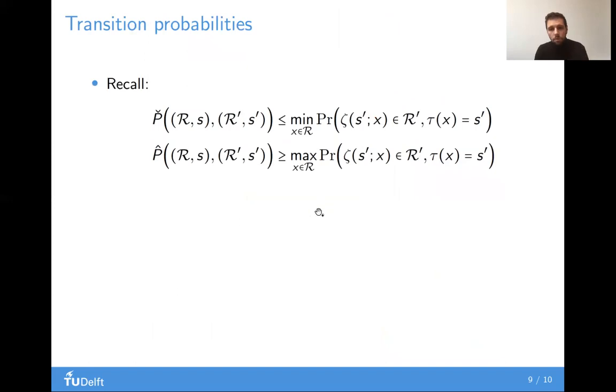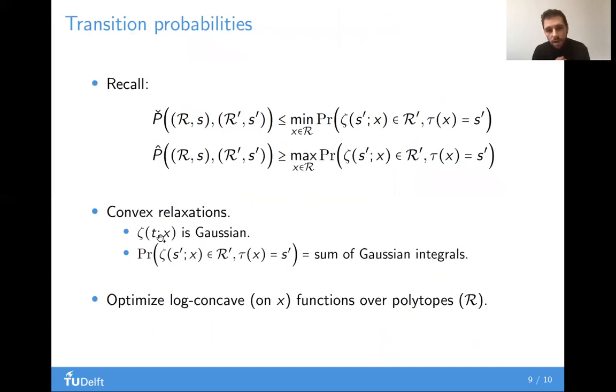Finally, for how to compute bounds on the transition probabilities, I'm not going to delve into much detail, I'm just going to say this. To compute these minima and maxima, we basically employ a series of convex relaxations. We take advantage of the fact that the state is a Gaussian random variable because our system is linear with additive noise, and then we write the probability of interest as a sum of Gaussian integrals where the optimization variable x appears linearly in the mean of the Gaussians. Then, we end up with optimization problems of log concave functions over polytopes, which is something straightforward to solve.